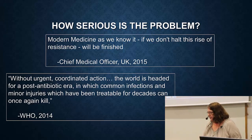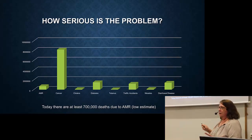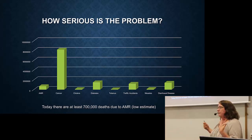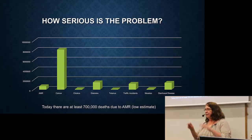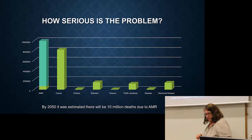There was an estimate made about the number of deaths due to antibiotic resistance we could expect in the future. Currently, about 700,000 deaths per year is the estimate due to antimicrobial resistance — and this is a low estimate, since many parts of the world don't have good data. You can compare that to cancer, which is about 8 million. They calculated that by the year 2050, if nothing is done, deaths due to antimicrobial resistance could rise to 10 million per year.